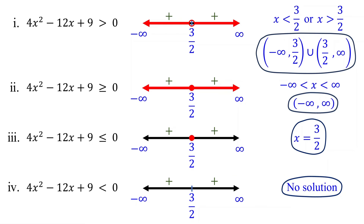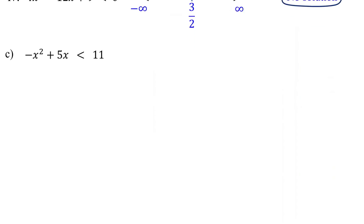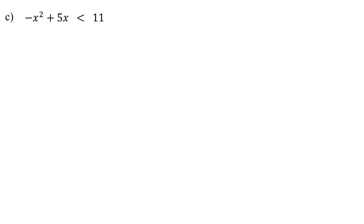However, if the quadratic equation has no real solution, the solution to the quadratic inequality can only be either all real numbers or no solution at all. This is important, so please stay with me — we are almost done. In the previous examples, the quadratic inequalities were given in standard form. However, in this case, the inequality is not in standard form. So, our first step here is to rewrite this quadratic inequality in standard form. To do this, subtract 11 from both sides of the equation.